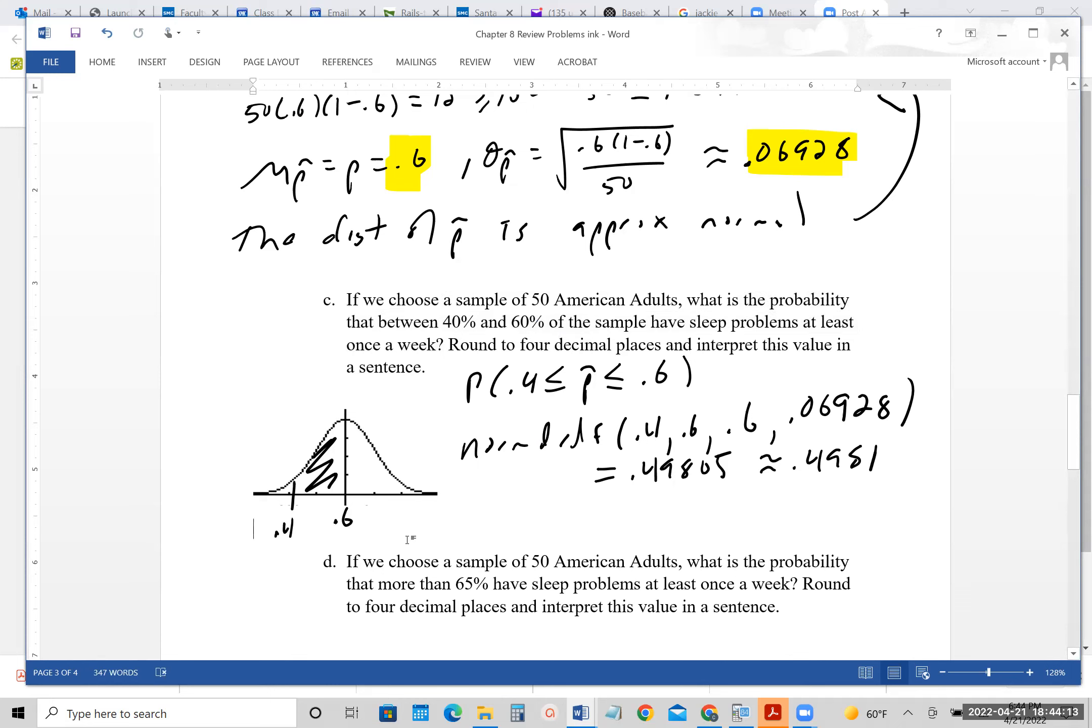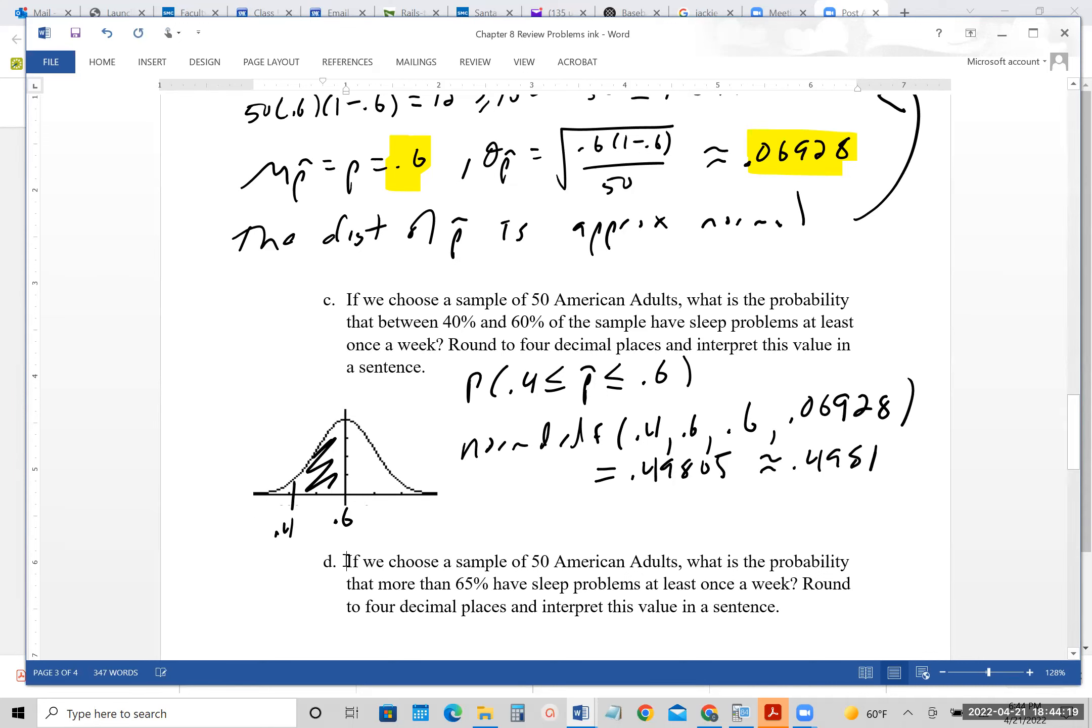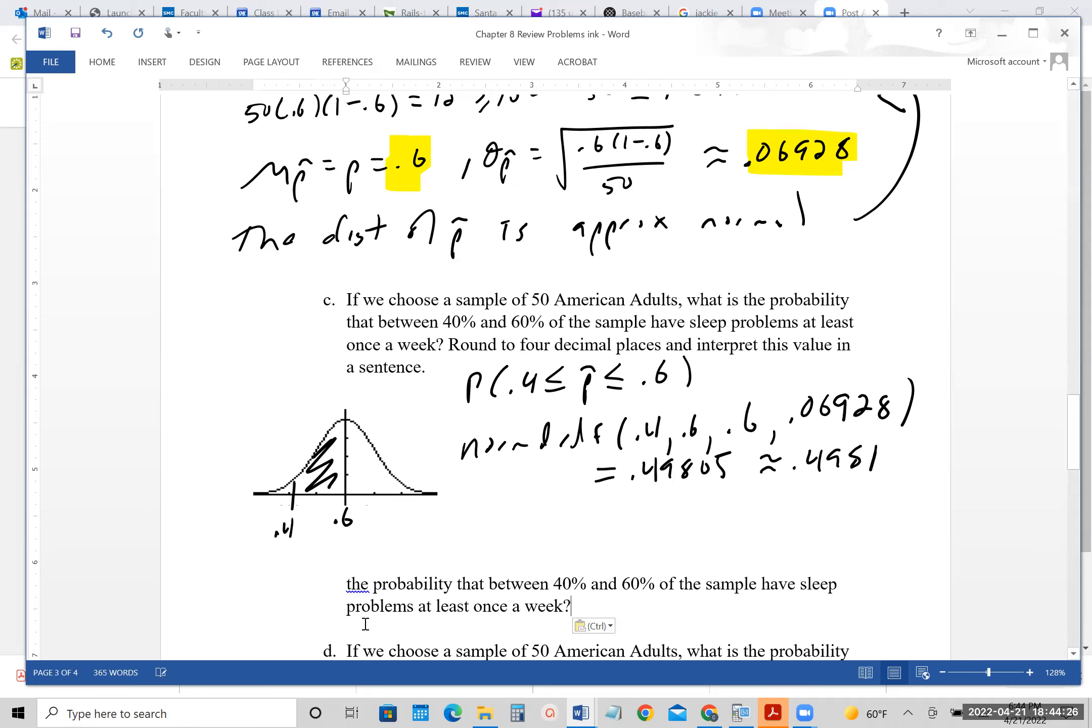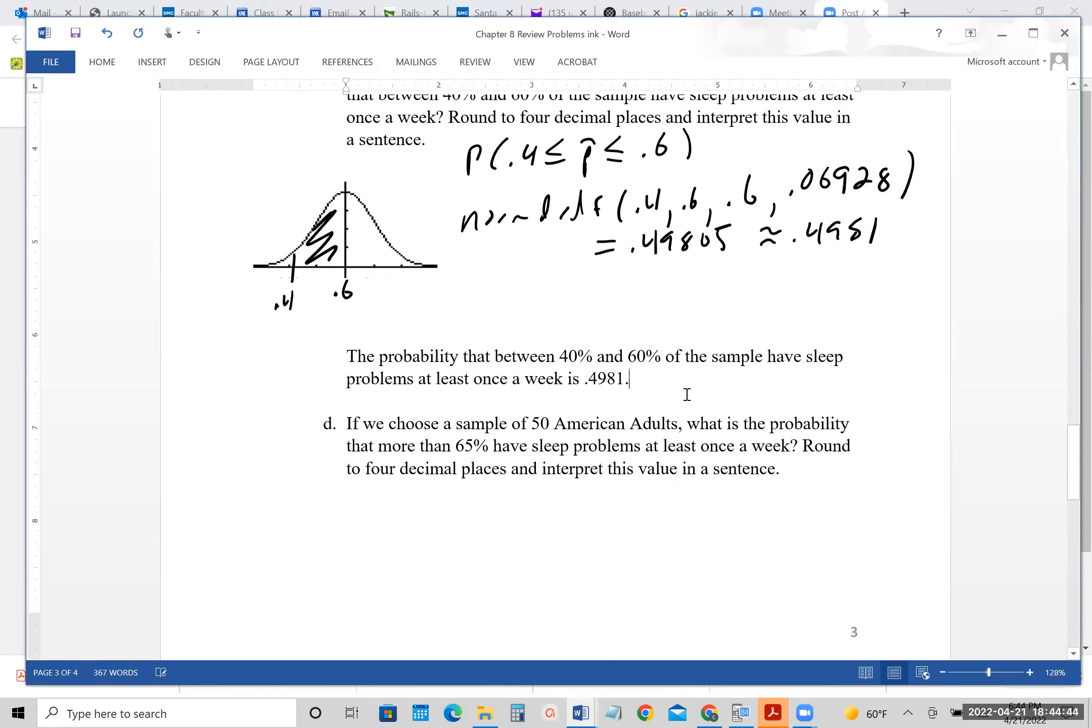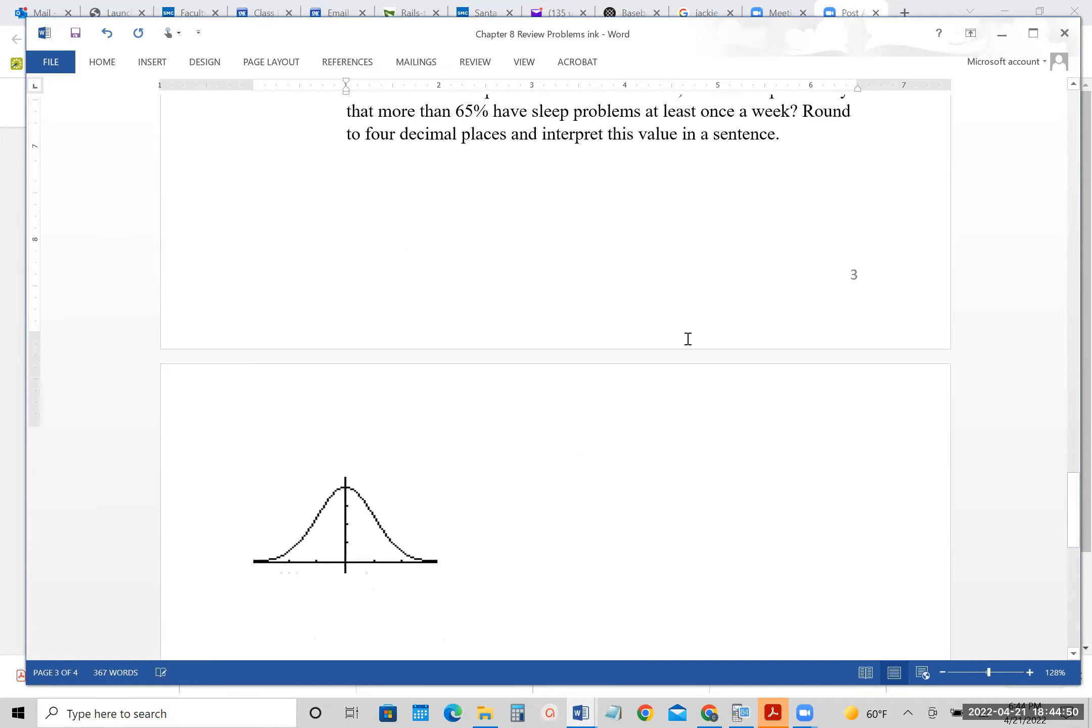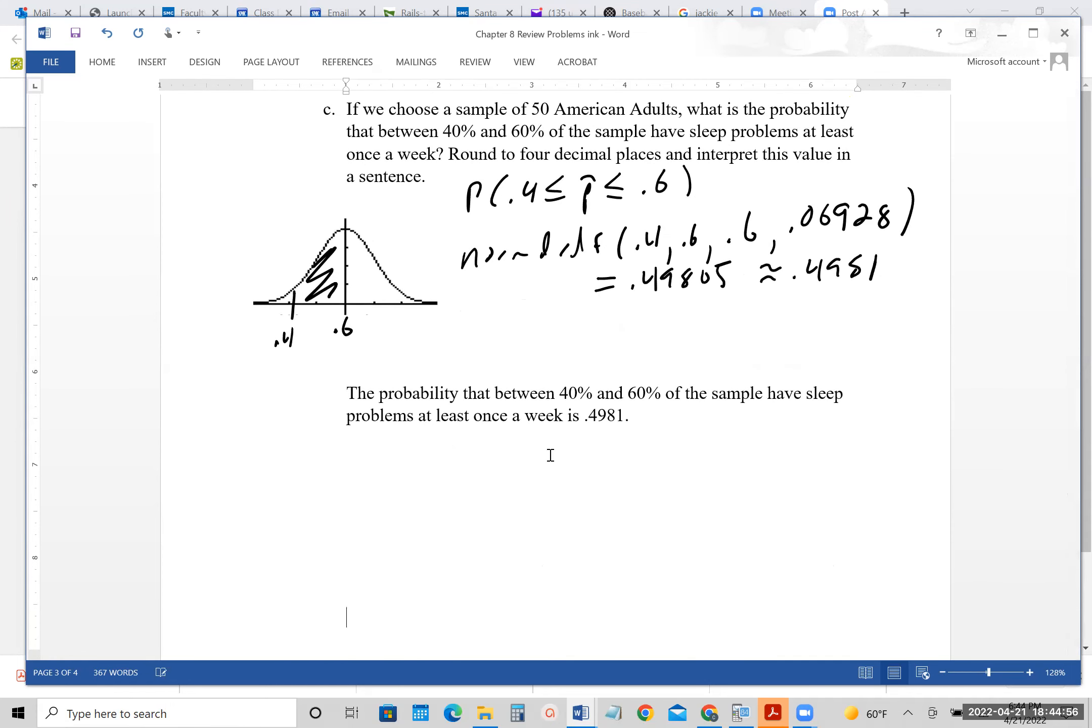Let's just double check. Write your values in a sentence. So what I would do is literally cut and paste. So I'm going to go over here, and where it says what is, I'm going to copy that part of it. I'm going to go down here and then we'll just say the probability, make that a capital, between 40% and 60% of the sample have sleep problems at least once a week is 0.4981. You can report it as a percent if you want, but I'm just going to leave it as a proportion. And that would be part C.